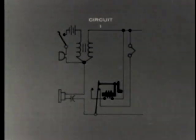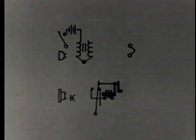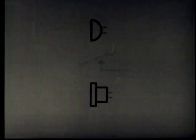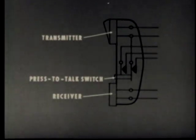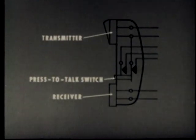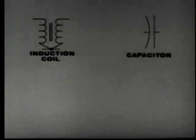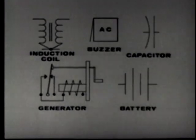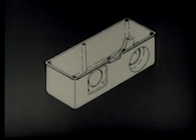The local battery telephone has a much greater transmission range than the sound-powered telephone. In a field telephone, the transmitter, receiver, and press-to-talk switch are combined into a convenient handset. The induction coil, capacitor, generator, battery, and buzzer are contained in a waterproof housing.